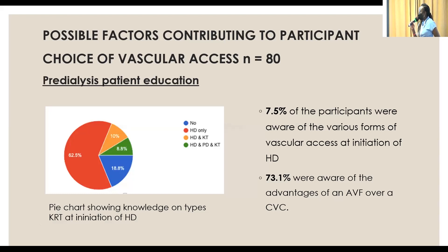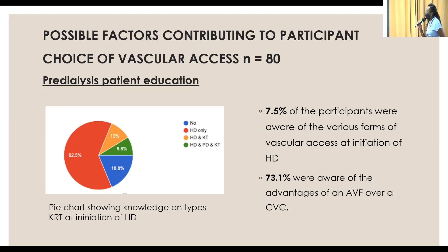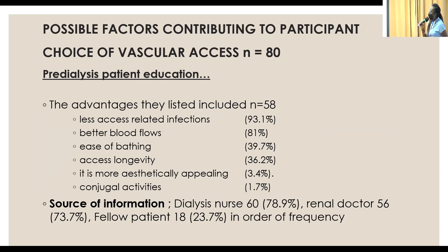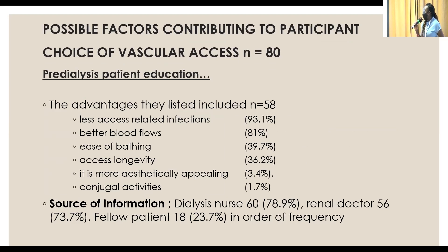When looking at pre-dialysis patient education, only 7.5% of participants were aware of the various forms of vascular access at the initiation of hemodialysis. However, 73.1% were aware of the advantages of having an AV fistula over a CVC, including less access-related infections, better flows, ease of bathing, access longevity, and being more aesthetically appealing. The sources of information were dialysis nurses, renal doctors, and fellow patients, in order of frequency. It's important for our nurses to be regularly giving patients this information.